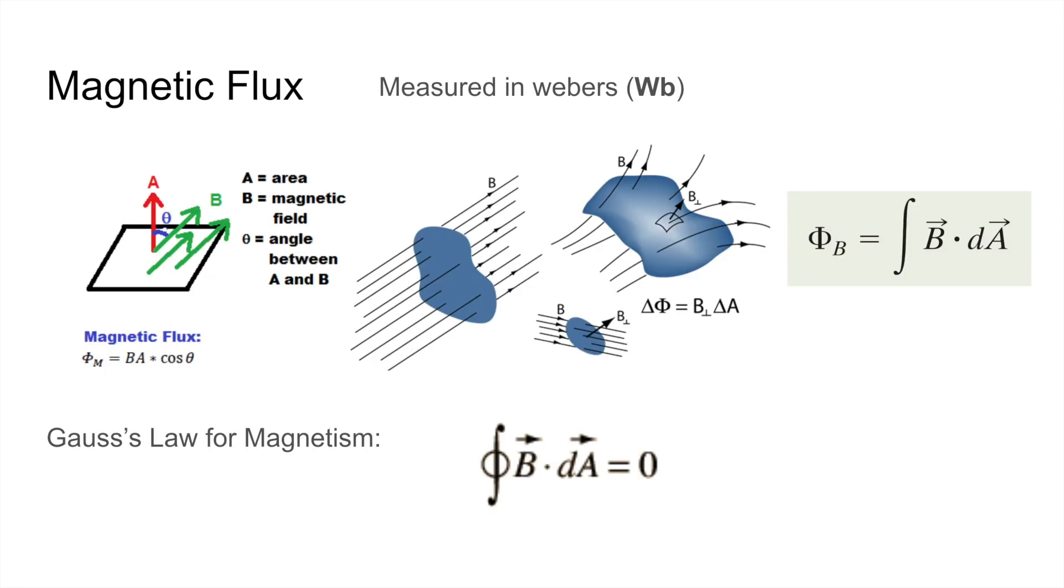The first concept to know is magnetic flux, which is measured in Webers, or Wb. The magnetic flux is simply the amount of magnetic field times a certain area. For a completely flat surface in a uniform magnetic field,